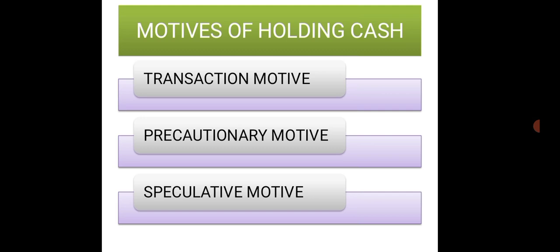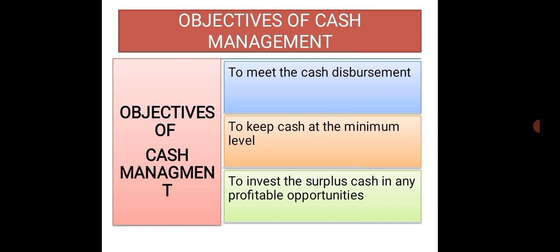The third motive is speculative. The speculative motive relates to holding of cash for investing in opportunities, because we are always looking for profitable opportunities for investing our money when they raise some issues. Such opportunities do not come in the normal course of business, so speculative motive is there for holding cash.